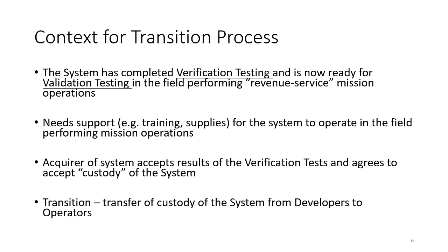Now we're going to turn the system loose and make sure that it can operate as needed by the business and mission plan in the field. In order for the system to operate in the field, it needs support — it needs training for the operators and it needs supplies. The transition process is the design or the coordination to train the operators and to provide all of the supplies: fuel, spare parts, and maintenance training for the system to operate in the field.